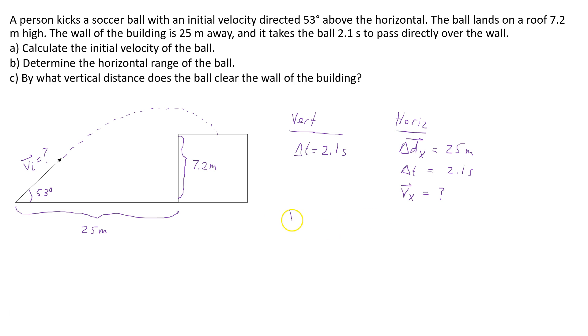So I'm going to do that now. The horizontal velocity is going to equal the horizontal displacement divided by the time. And so that's 25 meters divided by 2.1 seconds, which will give us 11.905 meters per second.